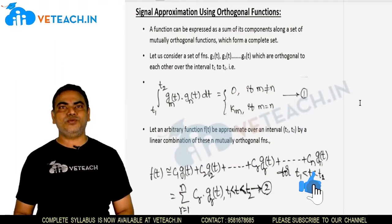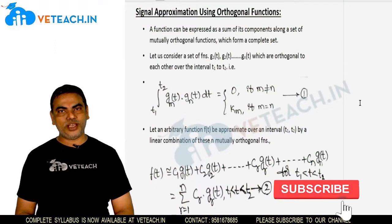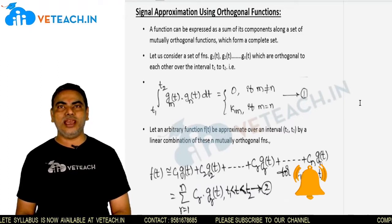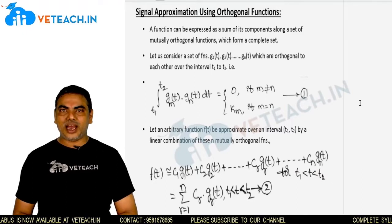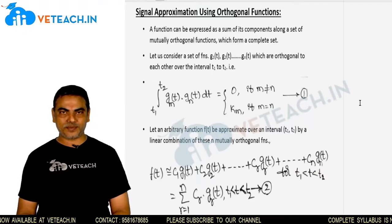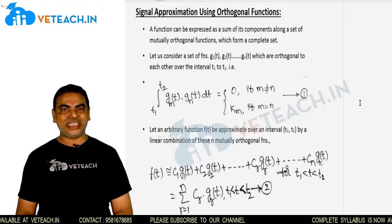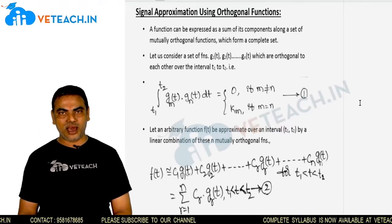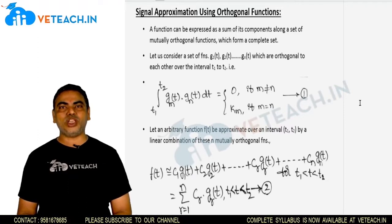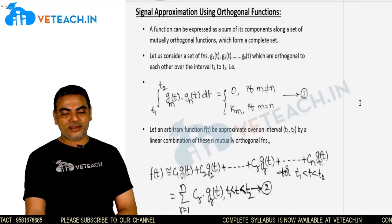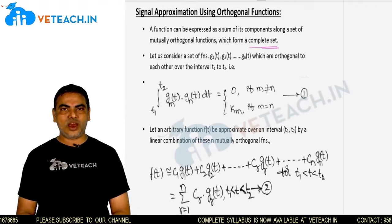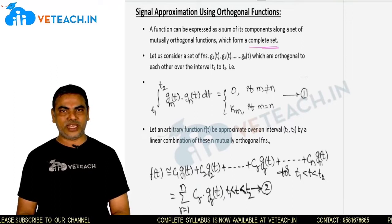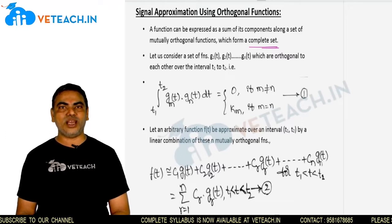Welcome to Vteach. Now I am going to discuss the topic signal approximation using orthogonal functions. We already explained in the orthogonal signal space that any function or any signal is possible to represent as a sum of its components along n number of mutual orthogonal functions when they form a complete set. Now let us see how the signal is approximated with n number of mutual orthogonal functions.